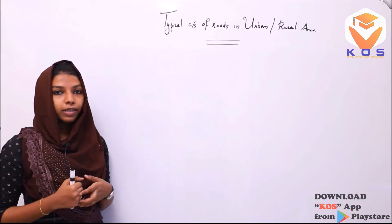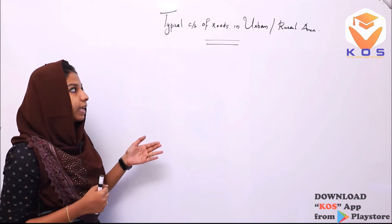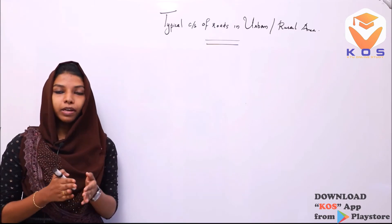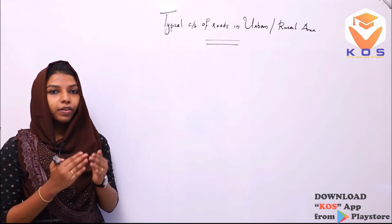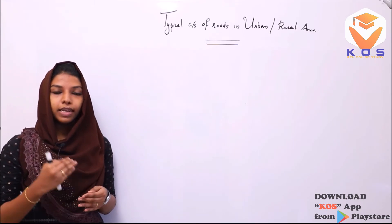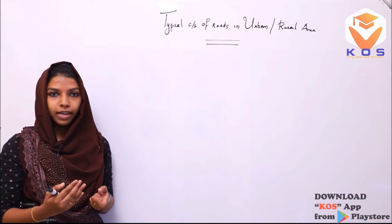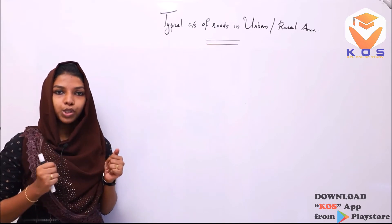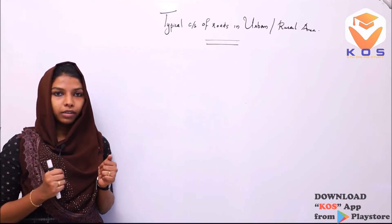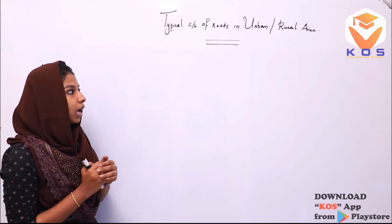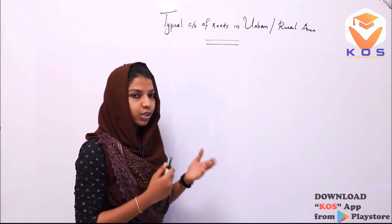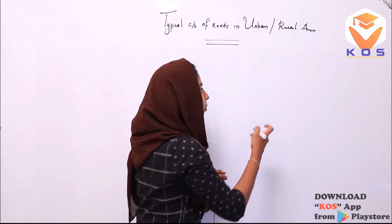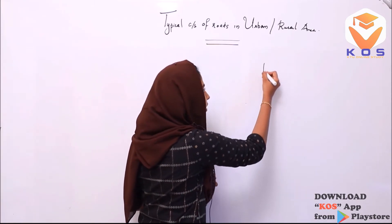The next topic is the typical cross section of roads in urban and rural areas. There are typical cross sections of roads in both urban areas. Let me explain the figure — I am going to explain the figure so we can learn the same.